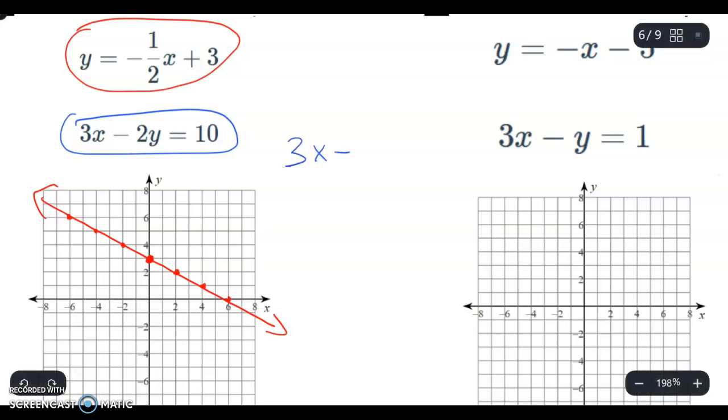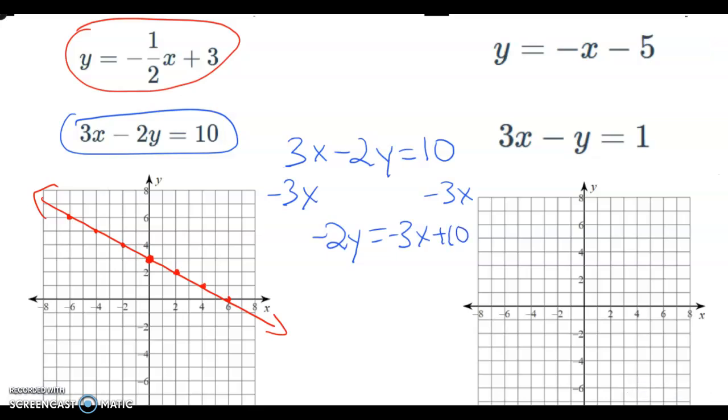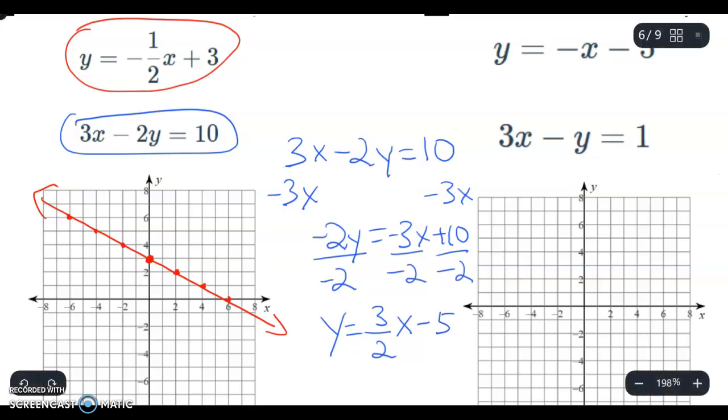And I talked about that in a previous video so all you got to do is subtract 3x on both sides that'll leave negative 2y equals negative 3x plus 10 since the 10 is positive. Now I'm divided by negative 2 and y equals negative divided by negative, it's a positive 3/2. Doesn't simplify or reduce, bring down the x here. 10 divided, well positive divided by negative is negative, 10 divided by 2 is 5.